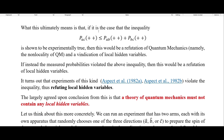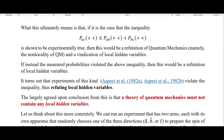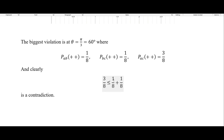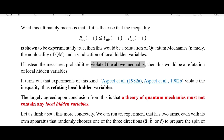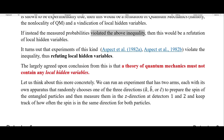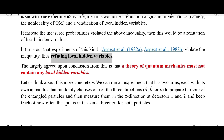So what this ultimately means is that if the inequality is shown to be experimentally true, then this would be a refutation of quantum mechanics — specifically a vindication of local hidden variables and a refutation of quantum mechanical non-locality. If instead the measured probabilities violated the above inequality, then this would be a refutation of local hidden variables. And as it turns out, experiments of this kind — some very early ones, with plenty more that have come after — violate this inequality, thus refuting local hidden variables. The largely agreed upon conclusion is that a theory of quantum mechanics must not contain any local hidden variables.